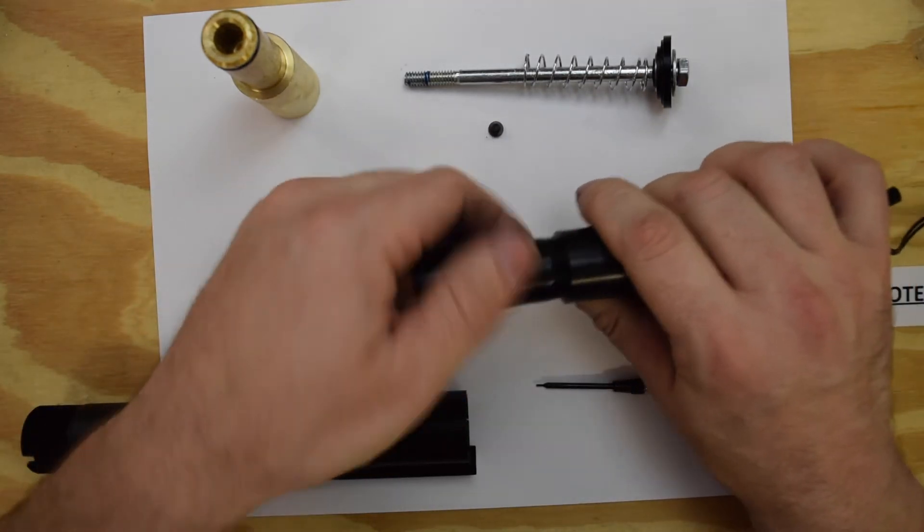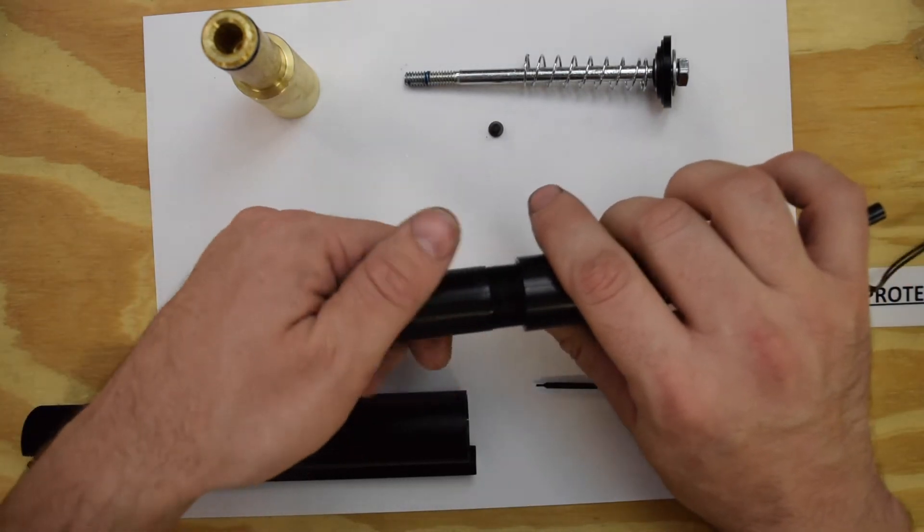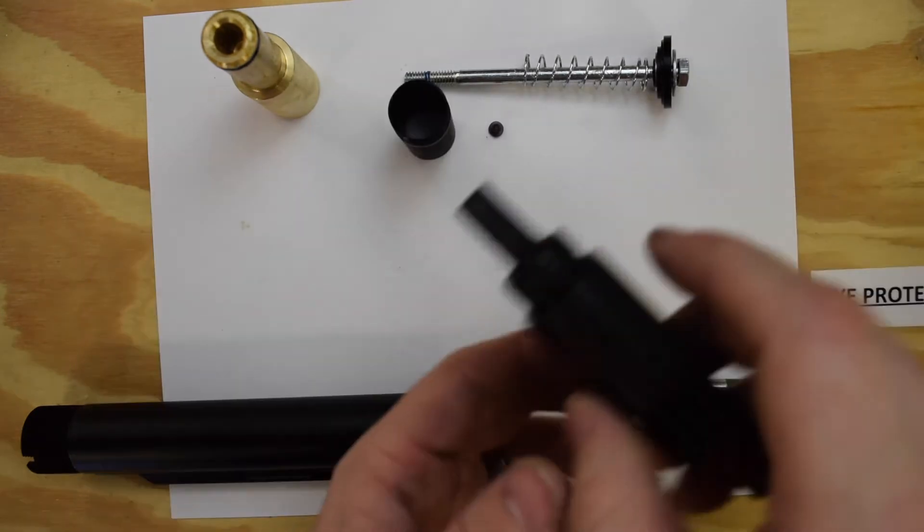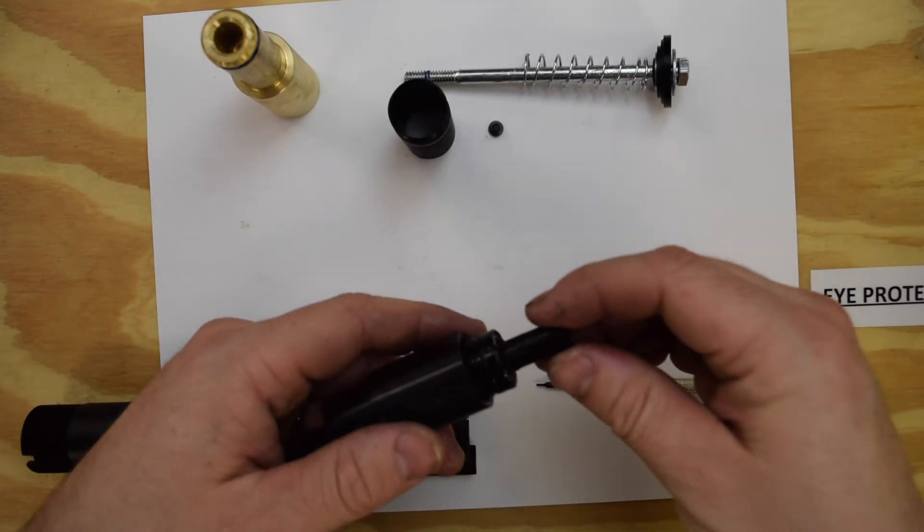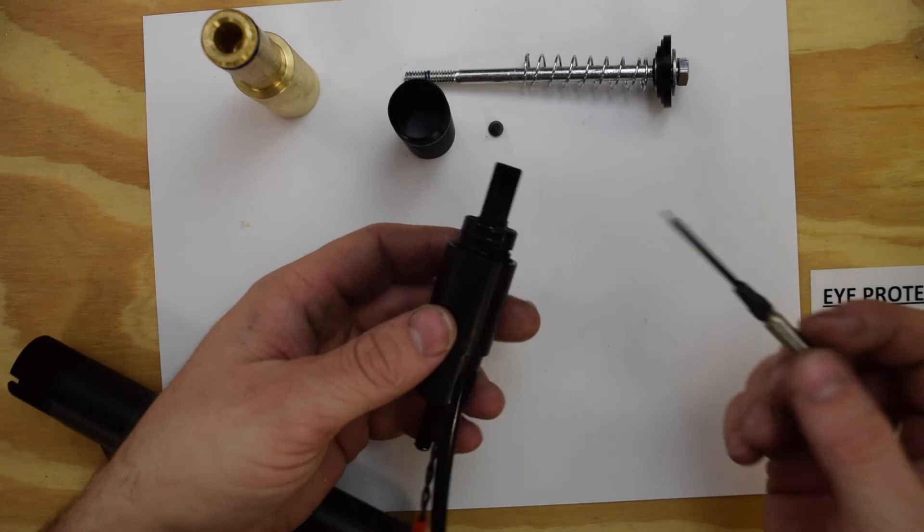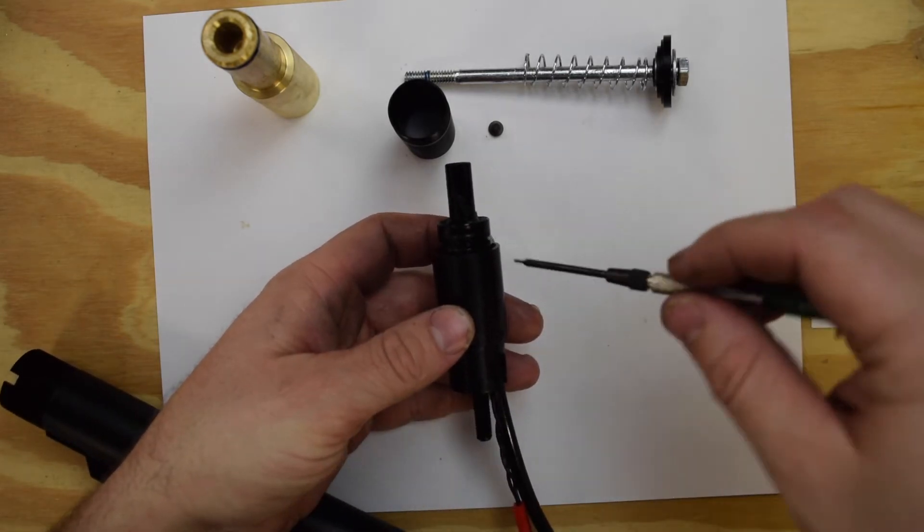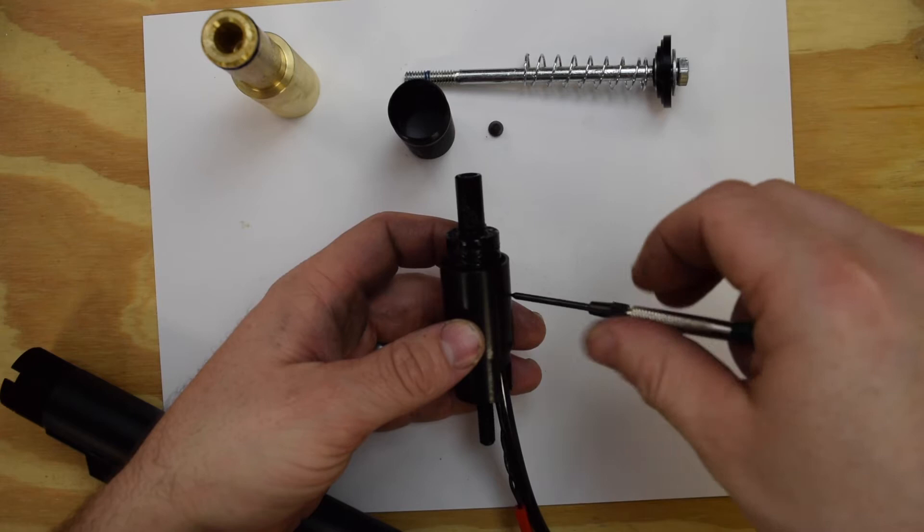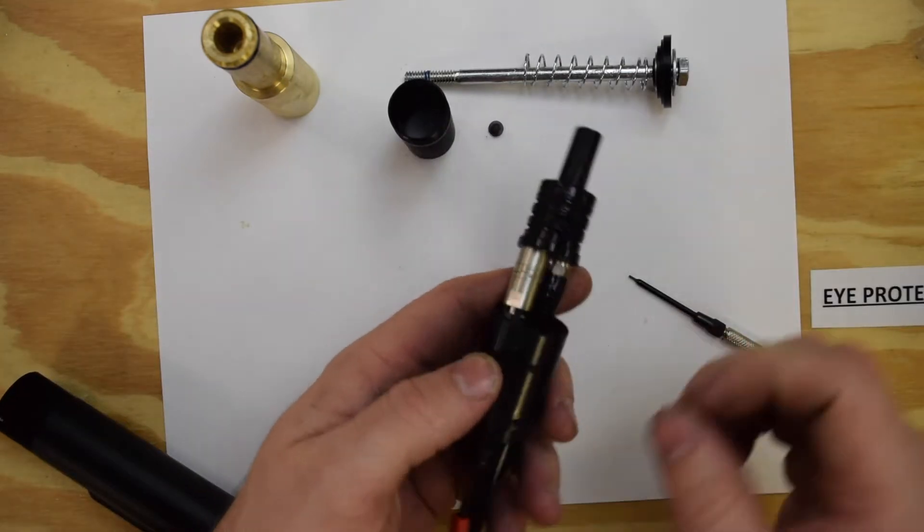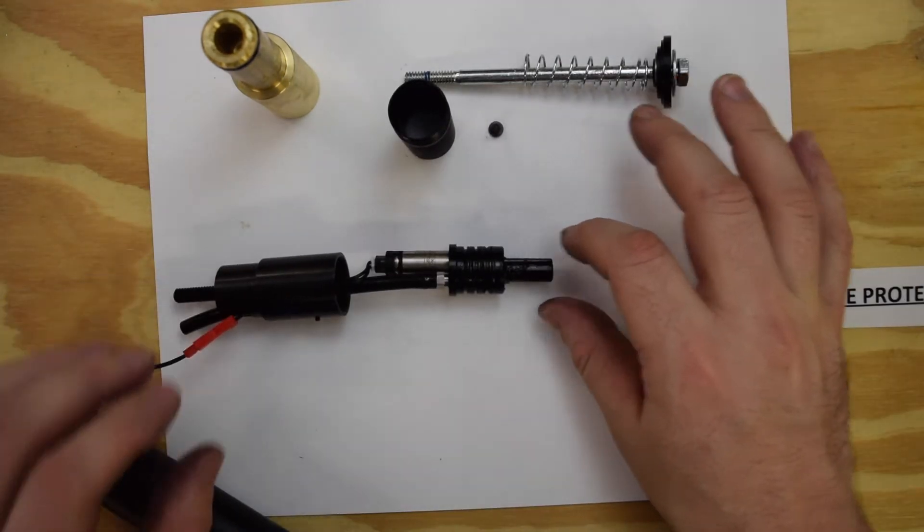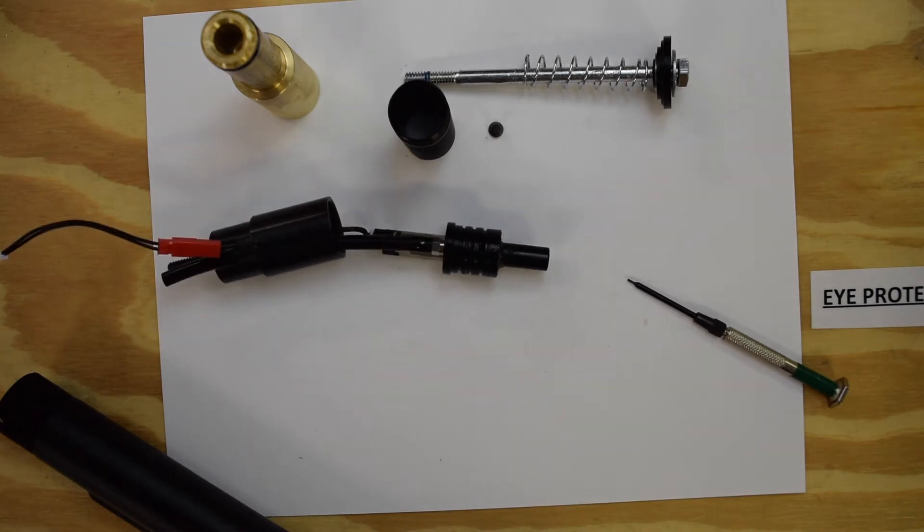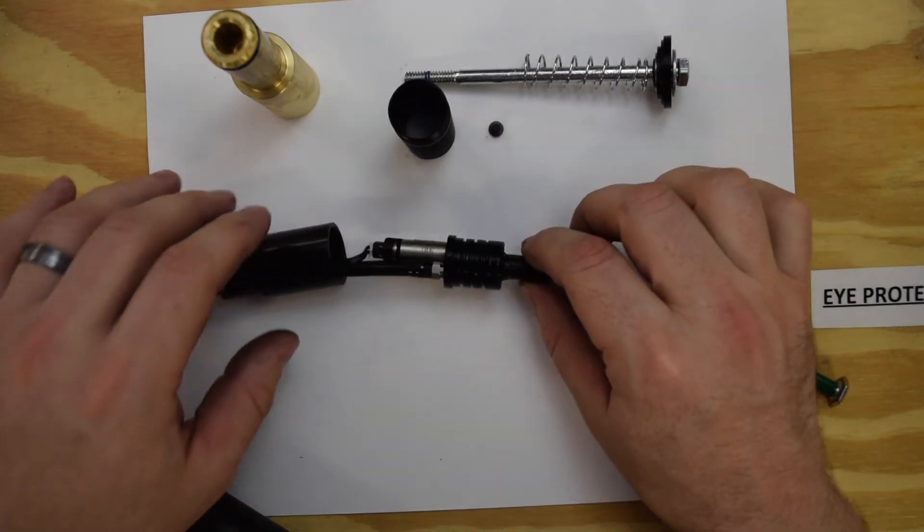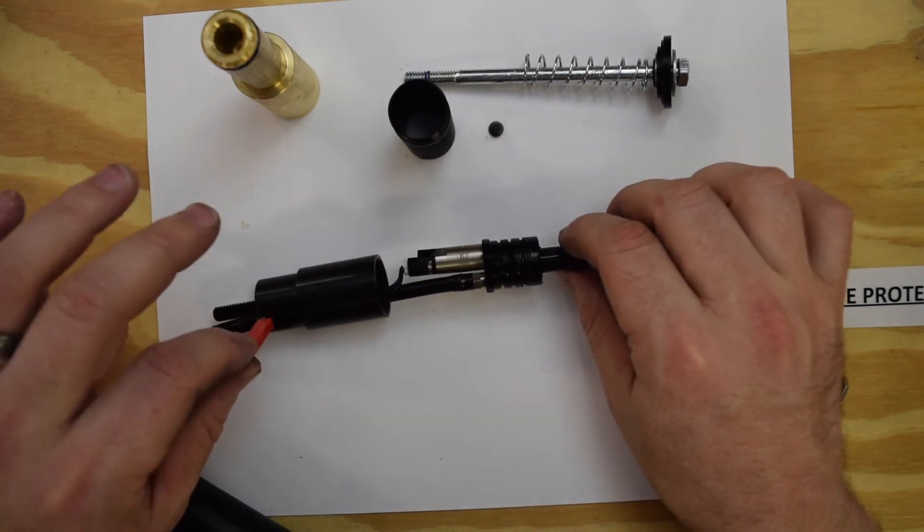There are no o-rings on this piece here. And then this is where you will need your very, very small allen key. There's a small set screw which sits right here which we're just going to back out, and then you can get access to your valve if you need it.